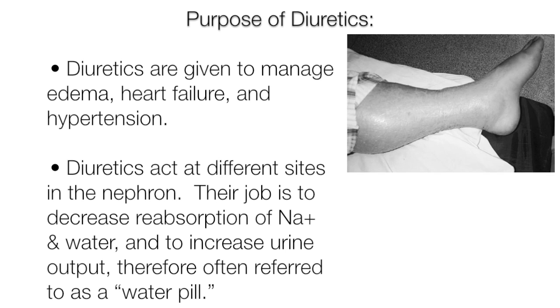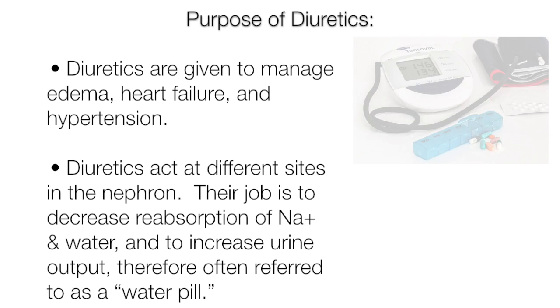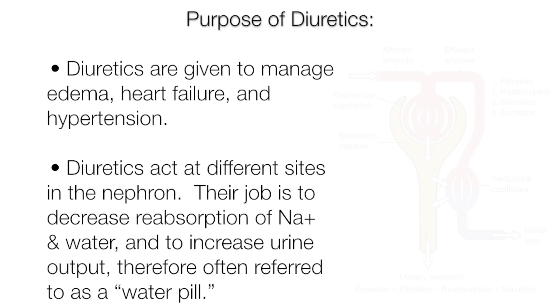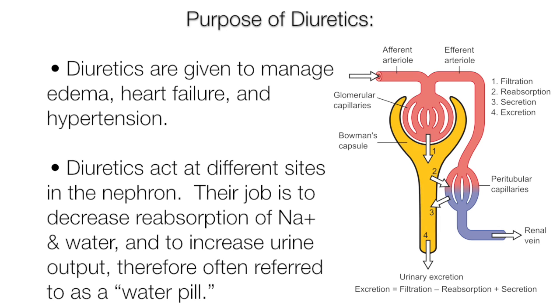Diuretics are drugs that increase the excretion of water, sodium, and other electrolytes through the kidneys, thereby increasing urine formation and output. Diuretics are given to manage edema, heart failure, and hypertension. Diuretics act at different sites in the nephron; their job is to decrease reabsorption of sodium and water and to increase urine output, therefore often referred to as a water pill.